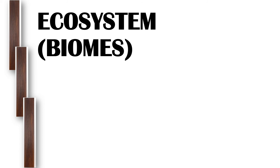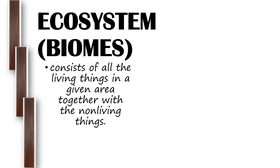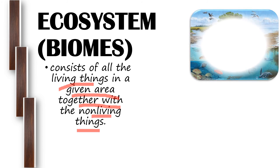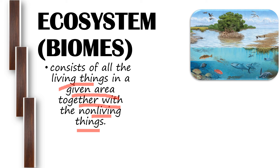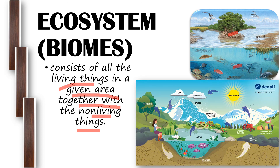Next we have the ecosystem, also called biomes. An ecosystem consists of all living things in a given area together with the non-living things. Examples include a marine ecosystem with mangroves, fish, phytoplankton, corals, and crustaceans. Another example includes trees, human beings, cycling of gases, plants, and snails. These are examples of ecosystems in the biological levels of organization.